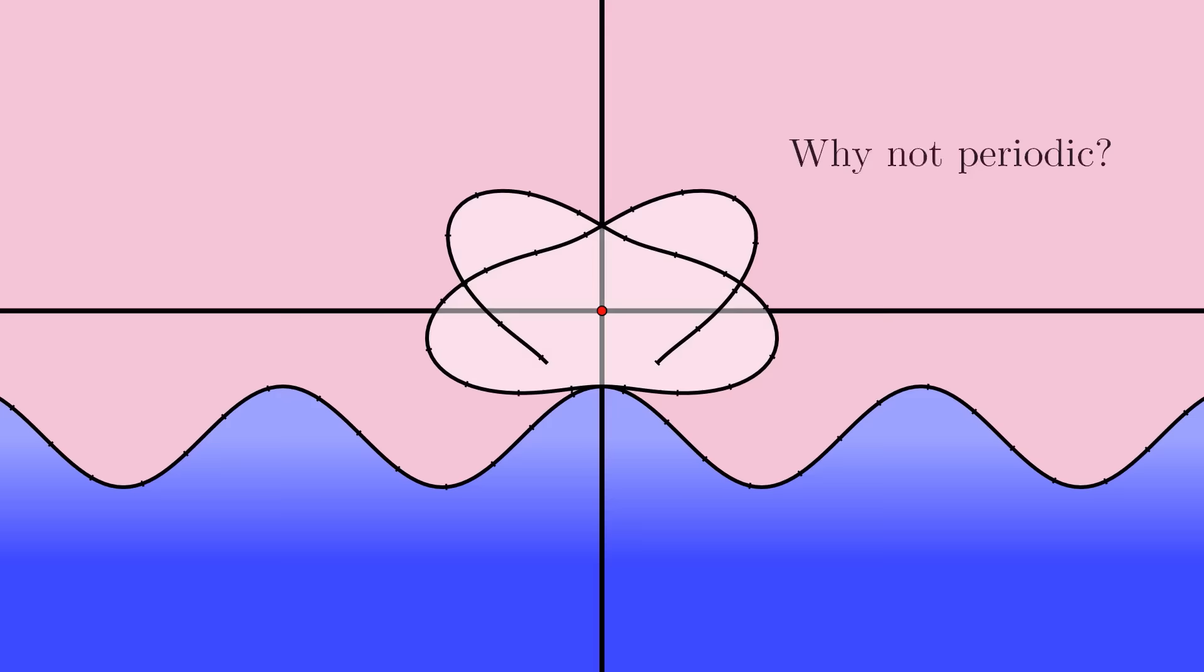But, you might point out, the road we started with IS periodic. It's a sine wave, after all. So what's the deal? Why isn't the wheel we got periodic too?